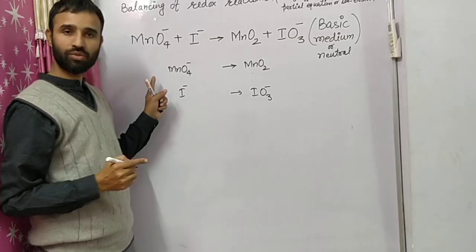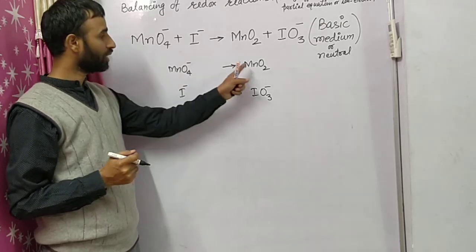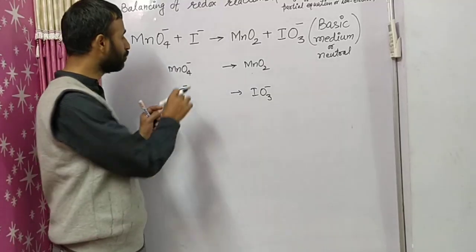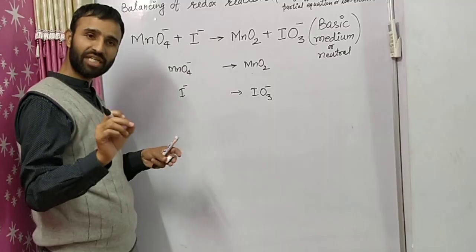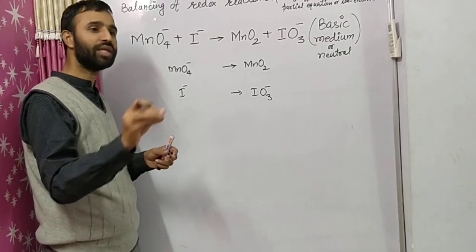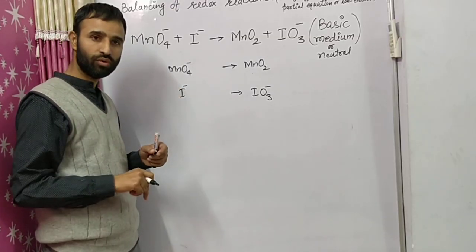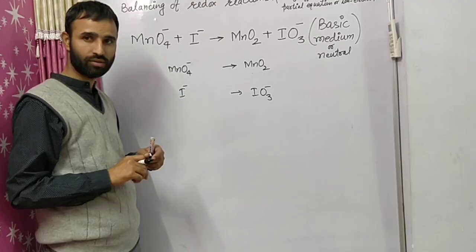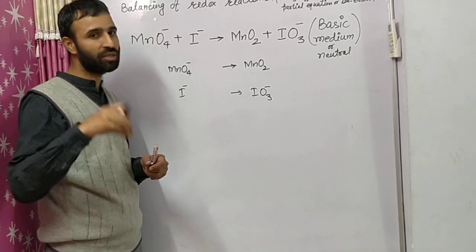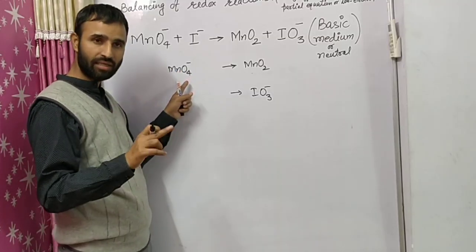The first point is to balance atoms other than oxygen and hydrogen. Manganese is already balanced on both sides, and iodine is already balanced, so we only need to balance oxygen. In acidic medium, we add H2O to the deficient side and H⁺ to the opposite side. But in basic medium, we add H2O to the side with excess oxygen, and double the number of OH⁻ ions to the opposite side — because basic medium has excess OH⁻.